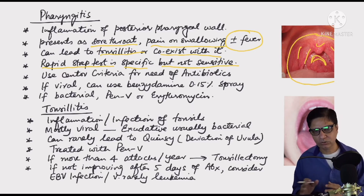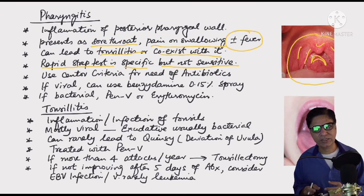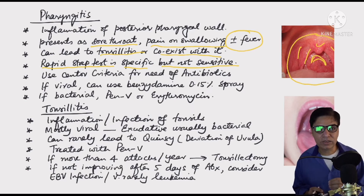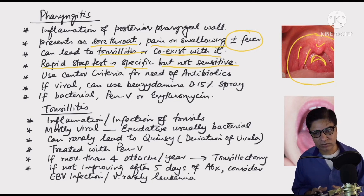The antibiotic used for bacterial pharyngotonsillitis is phenoxymethylpenicillin — a narrow-spectrum antibiotic very effective against group A streptococci, which remain sensitive to it. If the infection is viral, benzydamine 0.15% throat spray can be used every four hours — it is an anti-inflammatory spray that reduces pain in the throat so the child can swallow and take feeds.